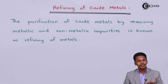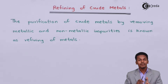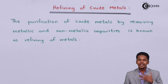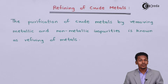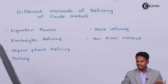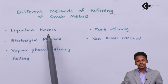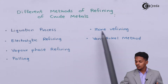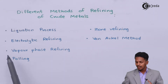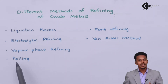There are different methods to refine the crude metal. Those methods are: liquation process, electrolytic refining, zone refining, van Arkel method, vapor phase refining, and poling.